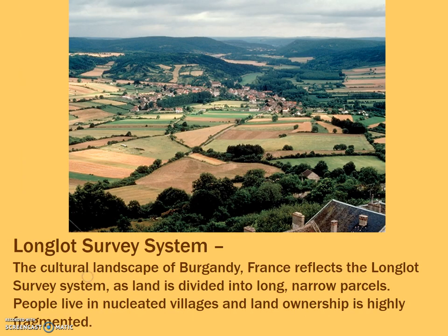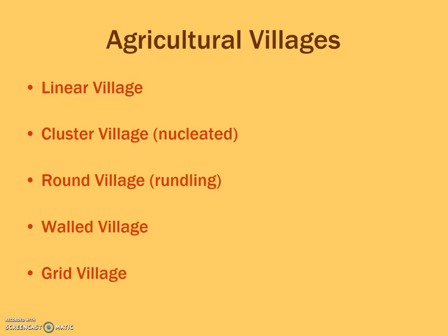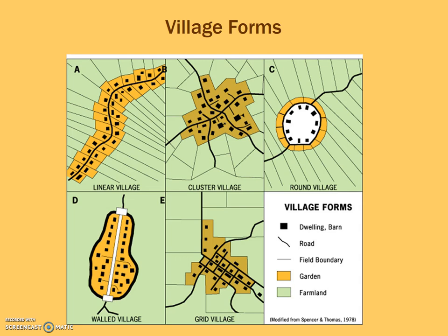This would be showing you the long lot again — everyone has access along a river or a road. The other way you can not only divide up the land in terms of individual properties, you can also take multiple properties and lay out a village. We're going to talk about six different agricultural villages.